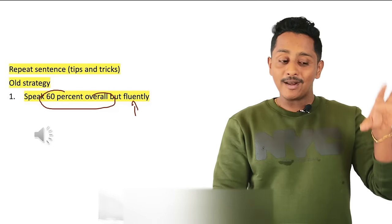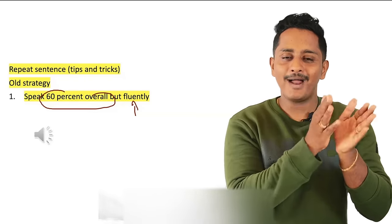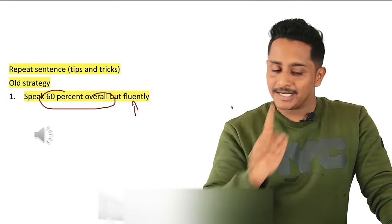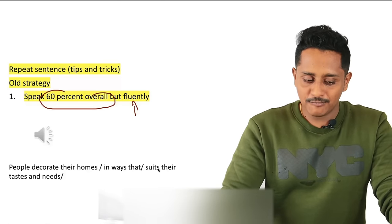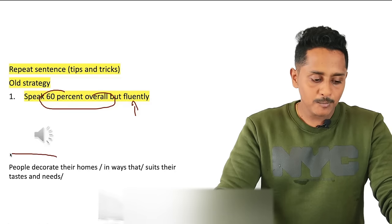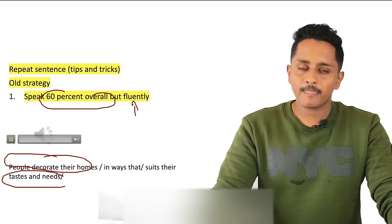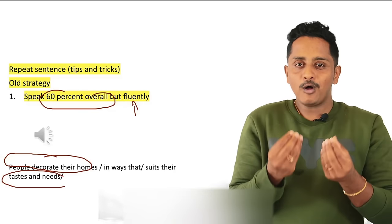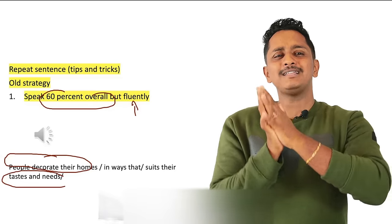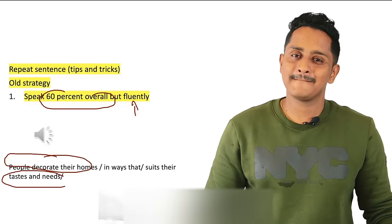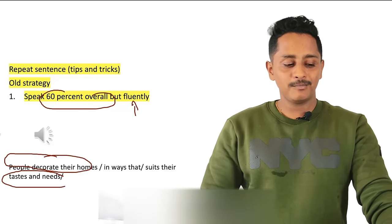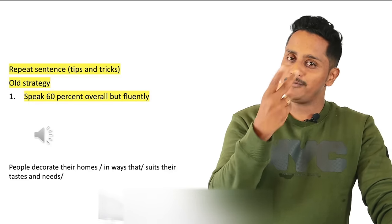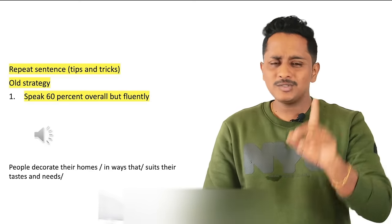Earlier I told: listen to only 60% — listen in parts. First phrase, last phrase. For example, while listening pay more attention to 'people decorate their homes' and 'taste and needs.' You repeat: 'people decorate their homes, taste and needs' — you'll get full marks. What we're doing in the old strategy is focusing on a few parts that are easy to retain, and then speaking them fluently. If you fumble, you get nothing.